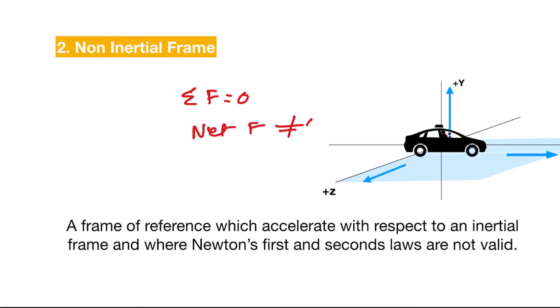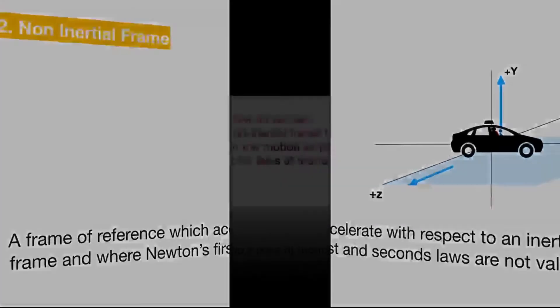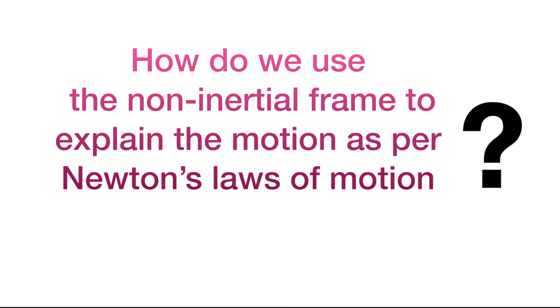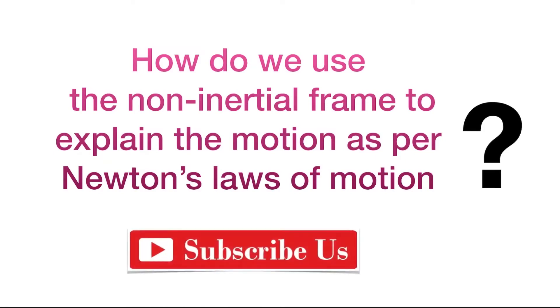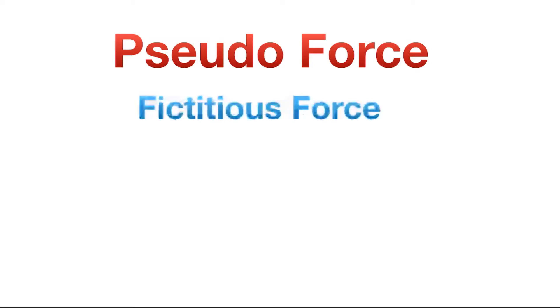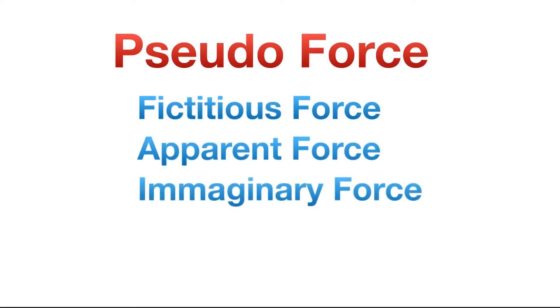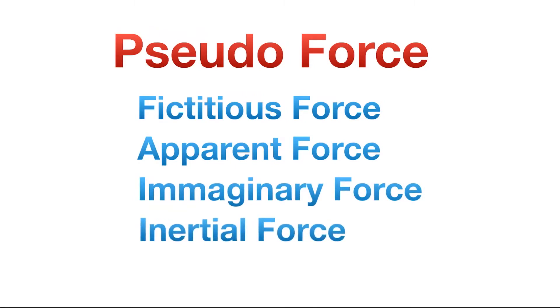Or conversely, even if there is a net force — if the net force is not zero — you can see the object is at rest, which violates Newton's laws of motion. So to explain motion using Newton's laws in non-inertial frames, we need a pseudo force. This force is also known as fictitious force, apparent force, imaginary force, or inertial force, which makes Newton's laws valid and explainable in non-inertial frames as well.